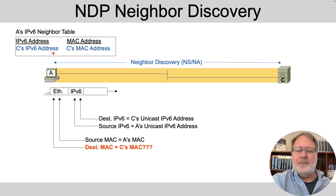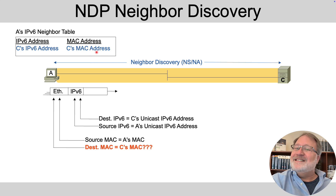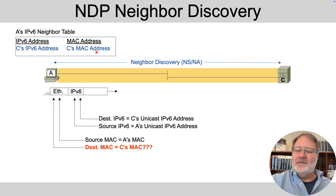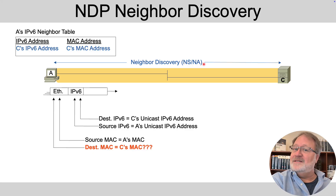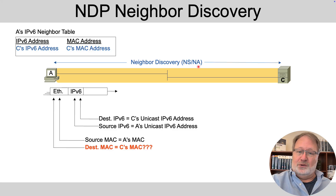If A did not already know that information, it would use the NDP messages — Neighbor Solicitation, which is the request, and Neighbor Advertisement, which contains the MAC address advertisement — to learn that information.